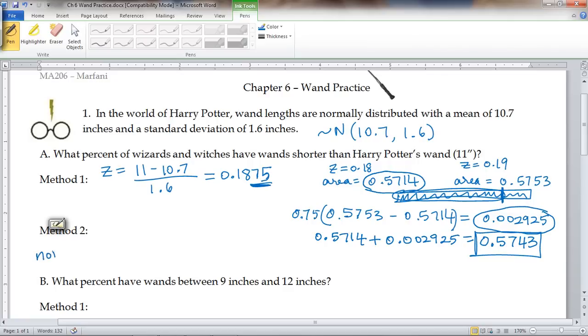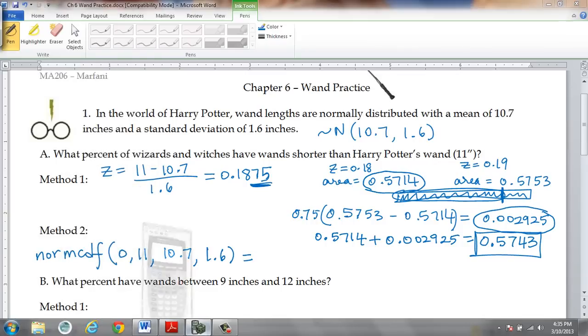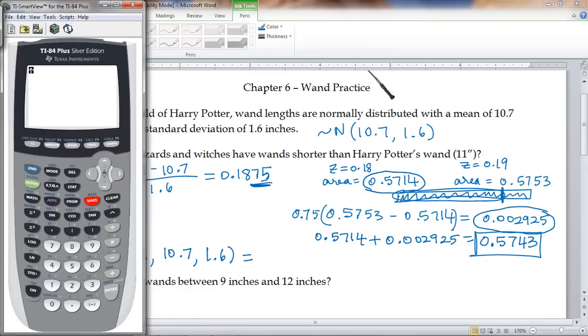Method two, which I think you'll like, is using the normcdf function. Lower limit, 0.001, upper limit, 11 inches. Mean is 10.7, and my standard deviation is 1.6. If you plug that into the calculator, 2nd vars, normcdf, and I want to look at how many wands are between 0 and 11 inches, given a mean of 10.7 and a standard deviation of 1.6. Enter, and I also get 0.5743.